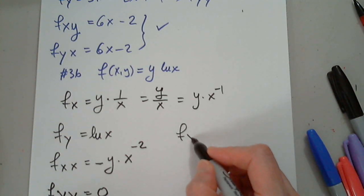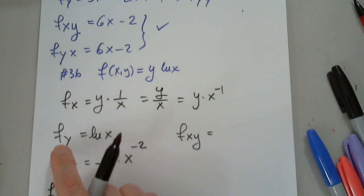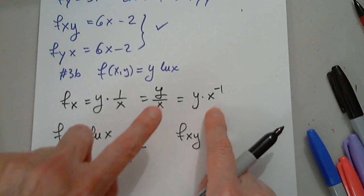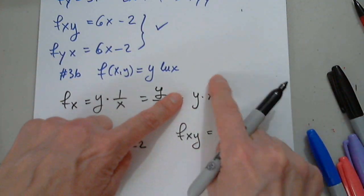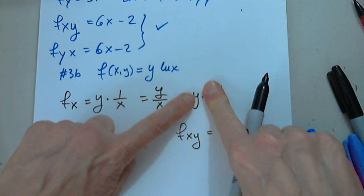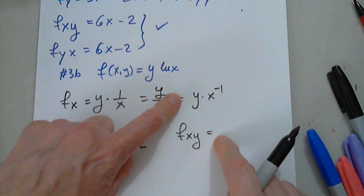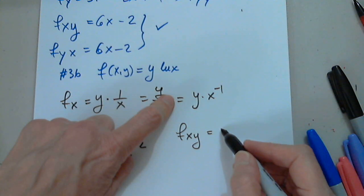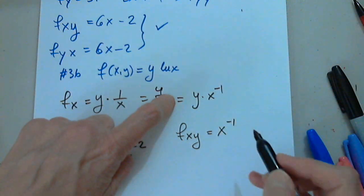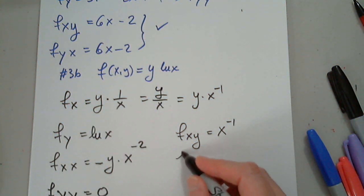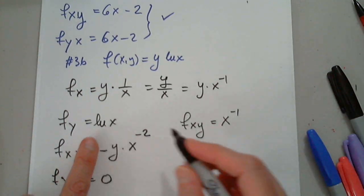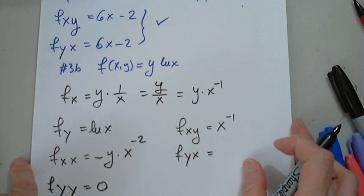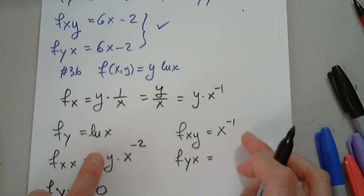So now fxy. So I have fx, which is here. And now I differentiate it with respect to y. This is a constant. I'm only differentiating y. x to the negative first. That's it. Now we want to differentiate fy with respect to x. And it better be the same thing. Otherwise, we're in trouble.